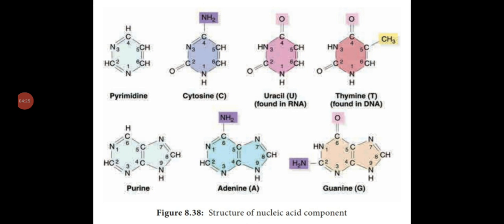This shows the different nucleic acid components present in the two types of nucleic acid, along with a chemical diagrammatic representation with formulas. First is the pyrimidine chemical formula, then cytosine, uracil, and thymine. Then the purines — there are two: adenine and guanine.